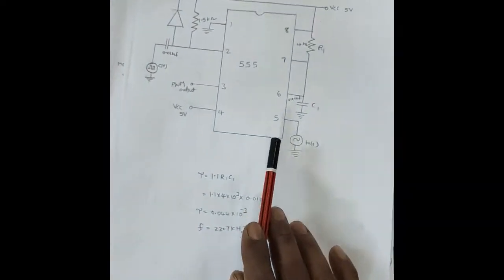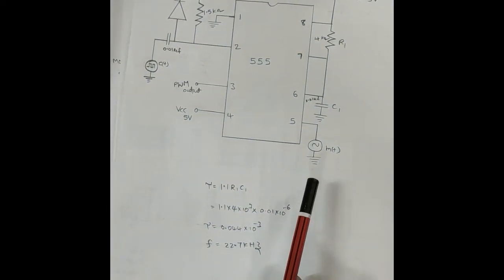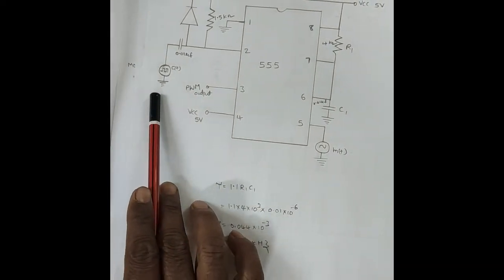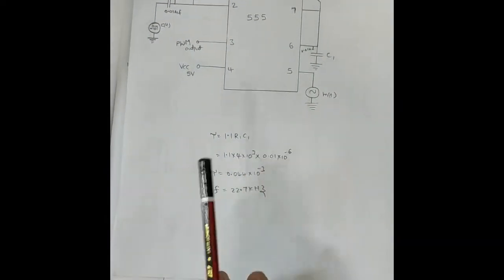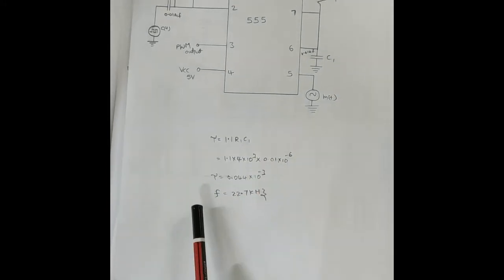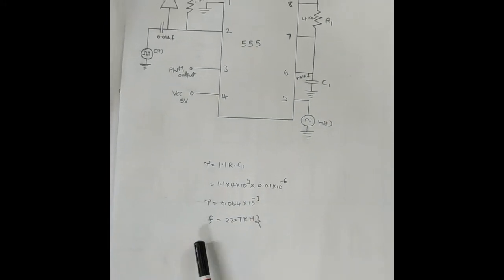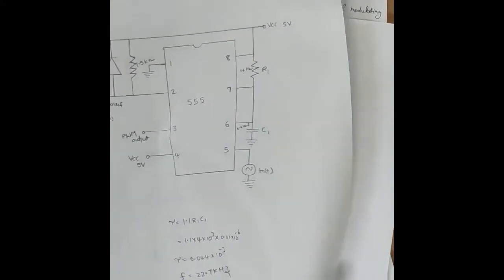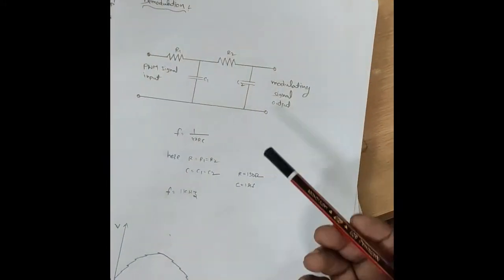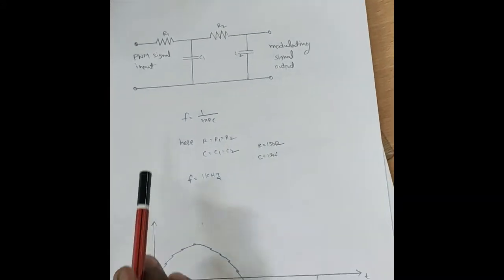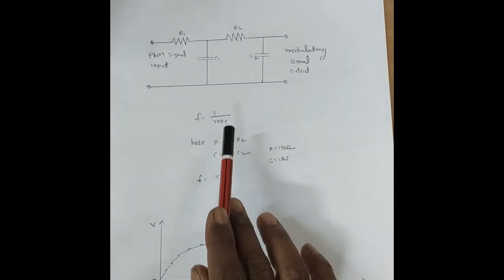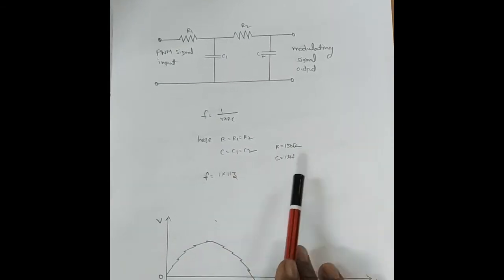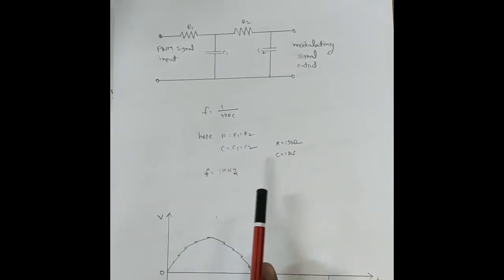This is the Pulse Width Modulation circuit diagram. The modulating signal is given to the 5th pin and the carrier pulse signal is given to the 2nd pin. The time constant tau equals 1.1 RC, and the pulse signal frequency is 22.7 kHz. This is the demodulation circuit diagram, where the cutting frequency Fc equals 1 by 25 RC. R equals 150 ohms, C equals 1 microfarad, and the cutting frequency is 1 kHz.